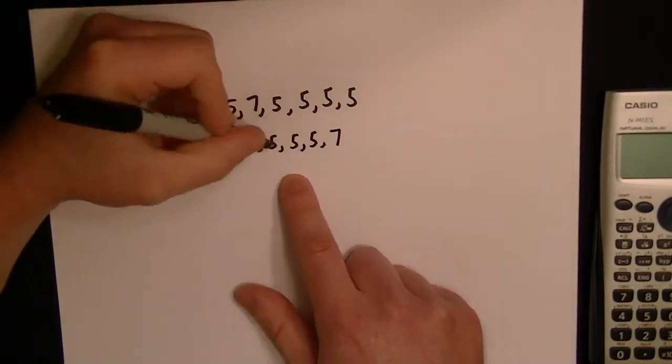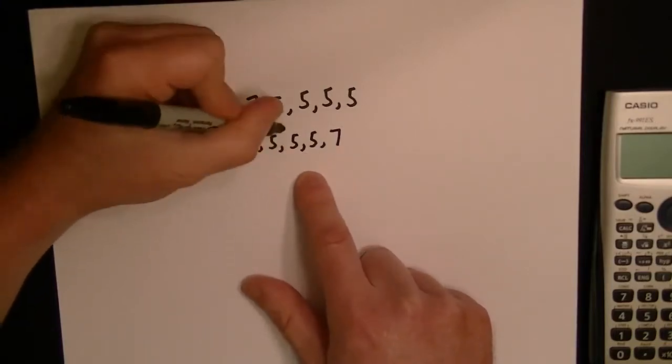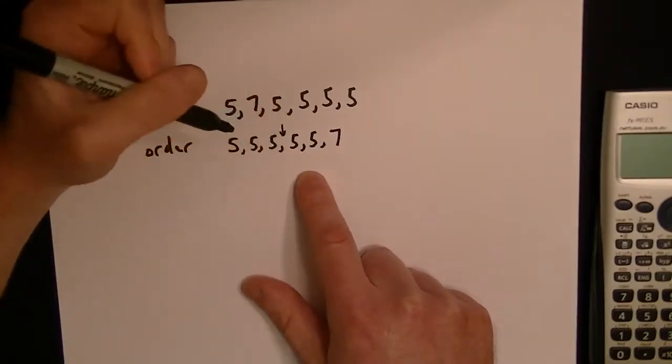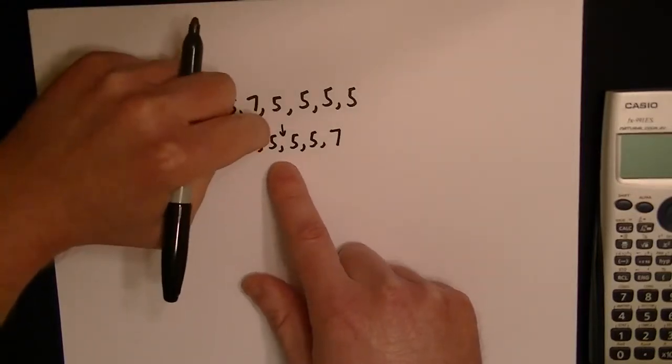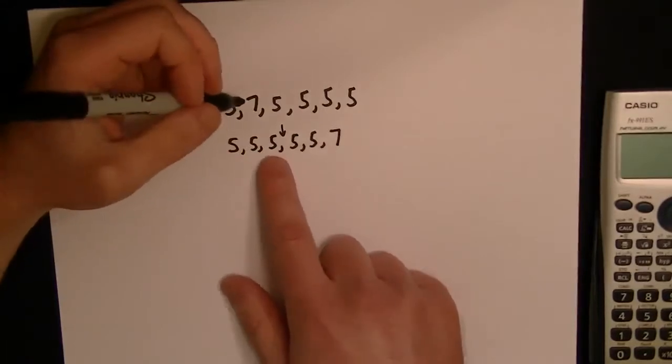So now if you look in the middle, well, you've got 6 numbers in total. So there isn't really a middle number. You'd have to have 3 on one side and then 3 on the other side and a number in the middle for there to be a middle number.